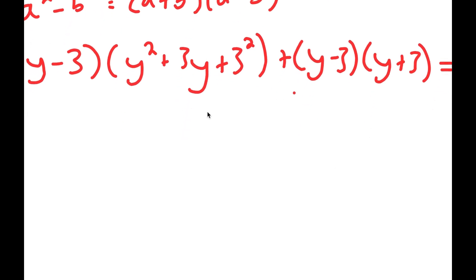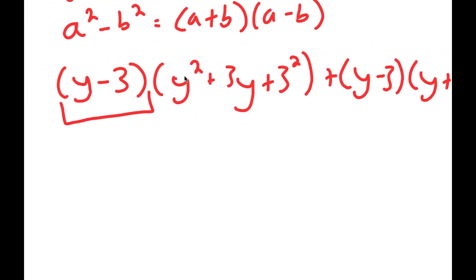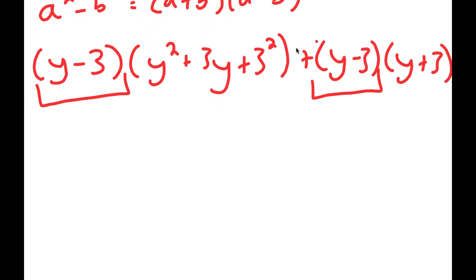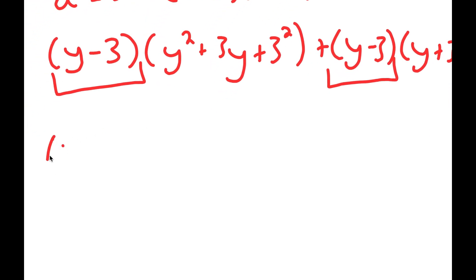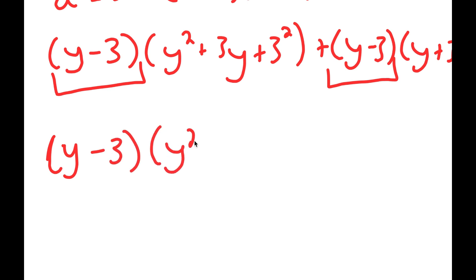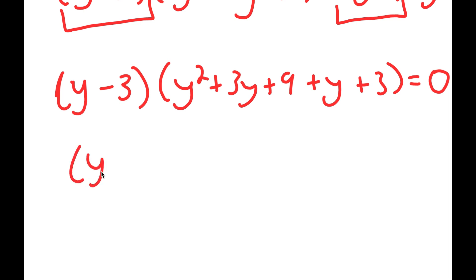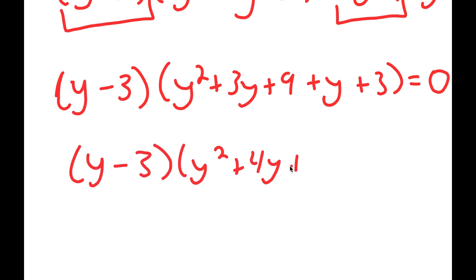And then I have this plus y minus 3 times y plus 3 is equal to 0. From here, I have a common factor of y minus 3 on both terms. So if I factor out y minus 3, I get y minus 3 times y squared plus 3y plus 9 plus y plus 3, equal to 0. This turns into y minus 3 times y squared plus 4y plus 12 is equal to 0 — all I did was add up the like terms.